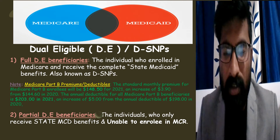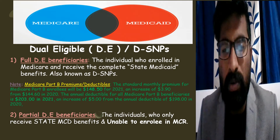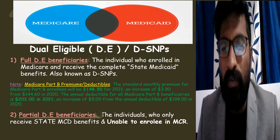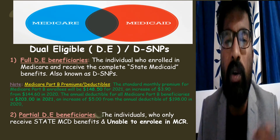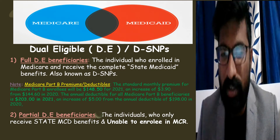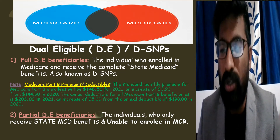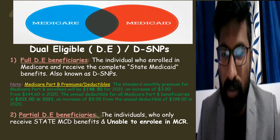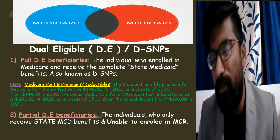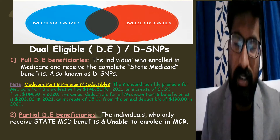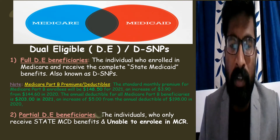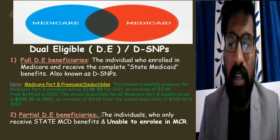The first point we should know is full dual eligible. A full dual eligible is an individual who is enrolled in federal Medicare and also receives complete state Medicaid benefits. This person is known as a full dual eligible beneficiary.